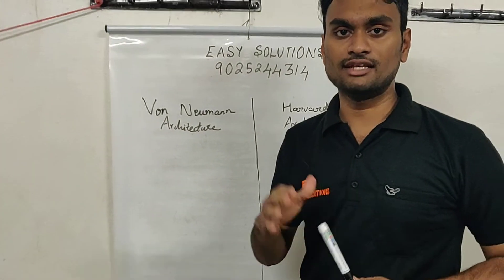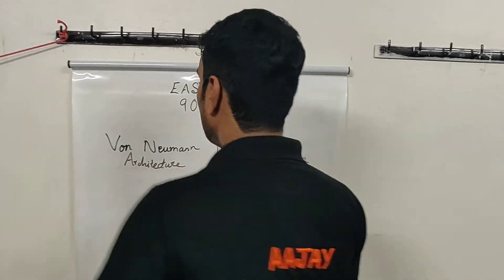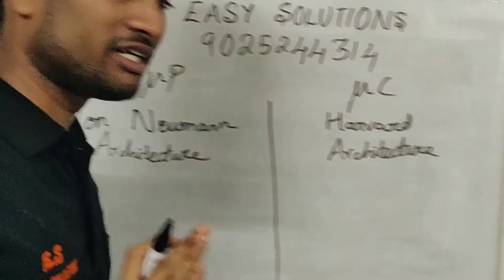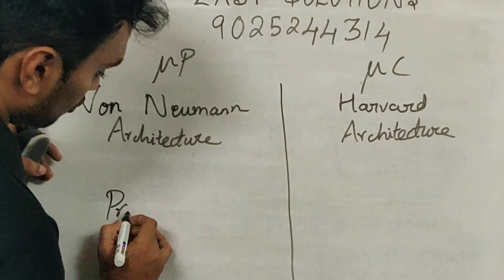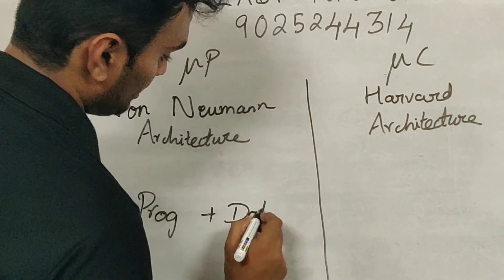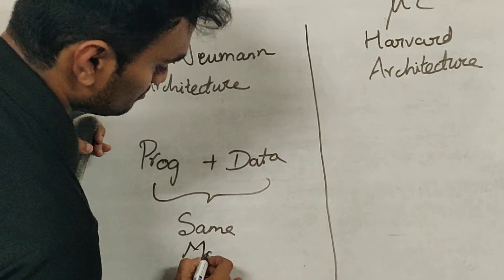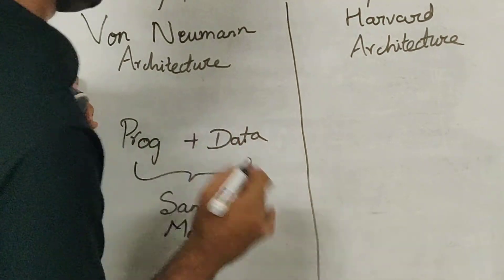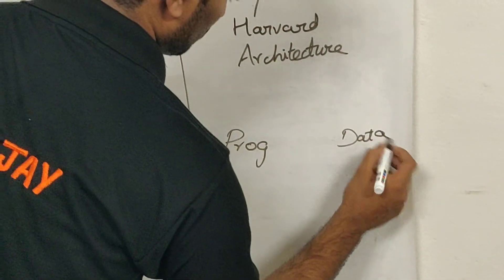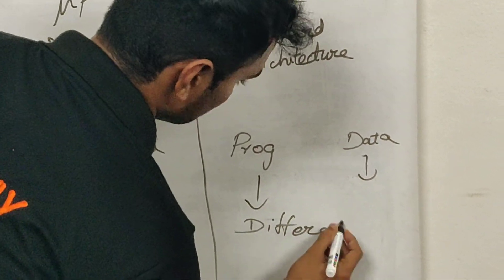In architecture, one device is the architecture. The Von Neumann architecture is microprocessors. The Harvard architecture is microcontrollers. As you can see, it's simple. The code is a program. The data is used for the same memory. This is Von Neumann. Now, the data is used in different memory and stored in Harvard architecture.